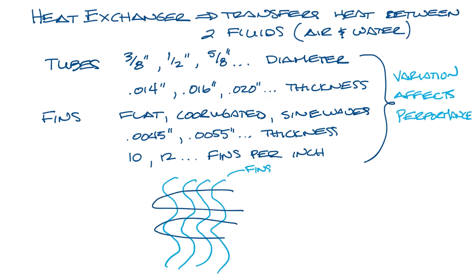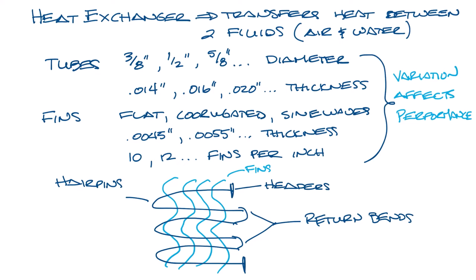The copper tubes are bent into hairpins and inserted through the fins. Each hairpin is connected to the next hairpin by a return bend that is welded on to make a continuous flow of water through the coil. The headers, also known as manifolds, are where your supply water and return water piping is connected to the water coil.